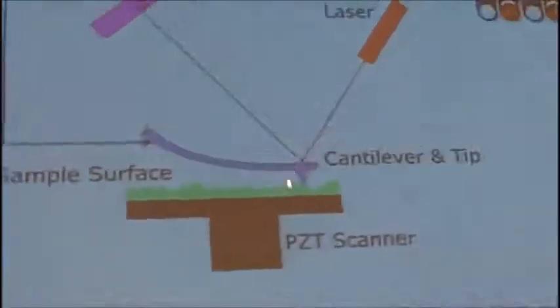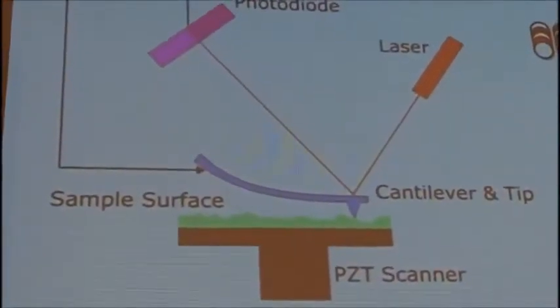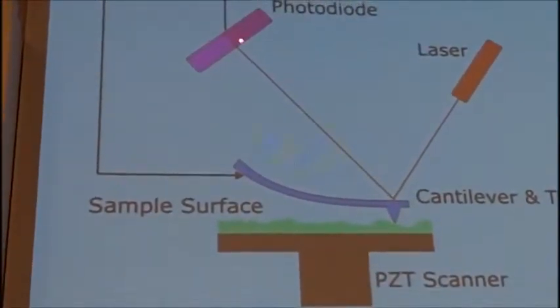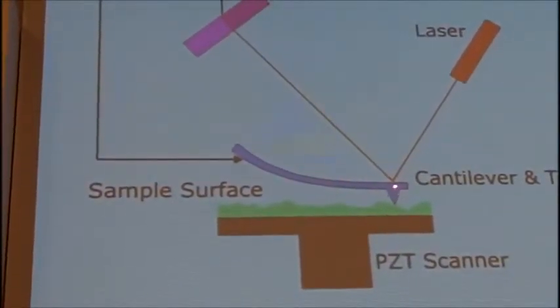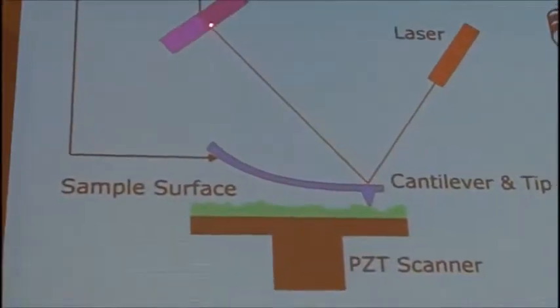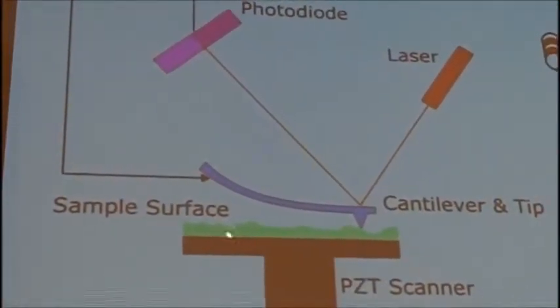It's a photosensitive detector, and this way we're always monitoring what's happening to the cantilever. When the cantilever is far away from the sample, nothing is happening—the laser will stay at the center of the detector. We align it in such a way that in the beginning the laser will stay in the center of the detector. When the tip is very close to the sample, the cantilever will start deflecting and this laser, instead of hitting the middle, will hit a bit above or a bit below, depending on the topography of the sample. So that's our feedback to know what's going on there.